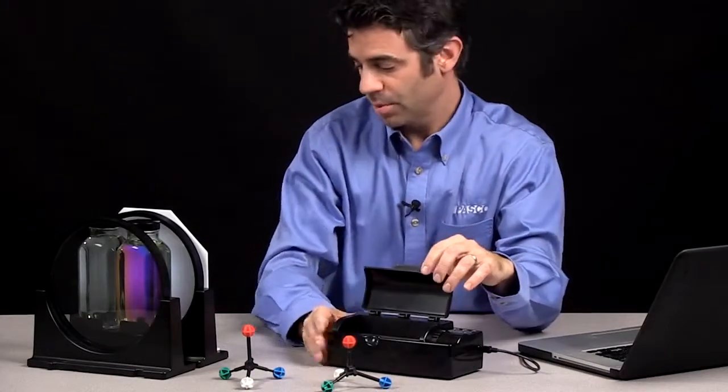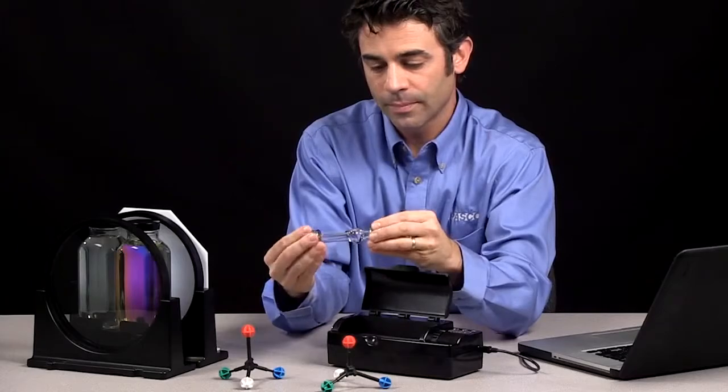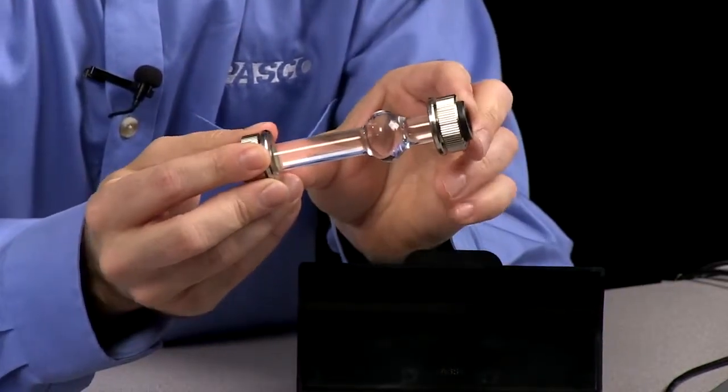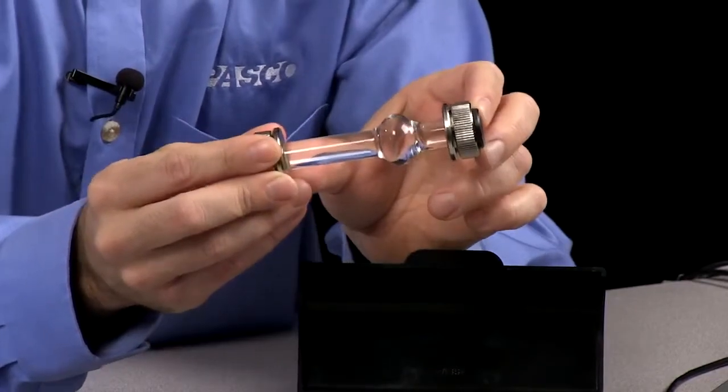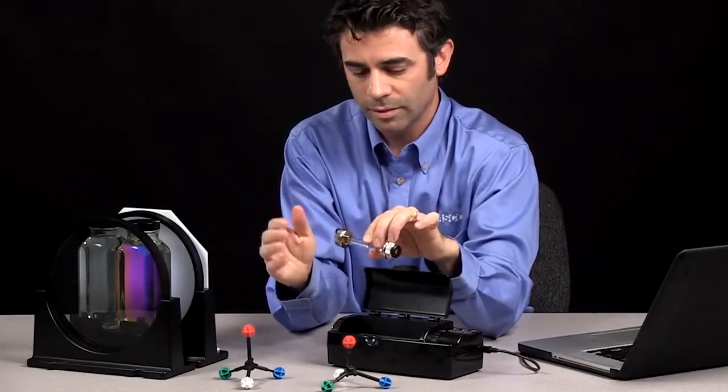Inside, there is a sample cell holder. And here's a sample cell. So this sample cell just has water in it. But it's a 100 millimeter sample cell with quartz ends, so it won't affect any of the light.